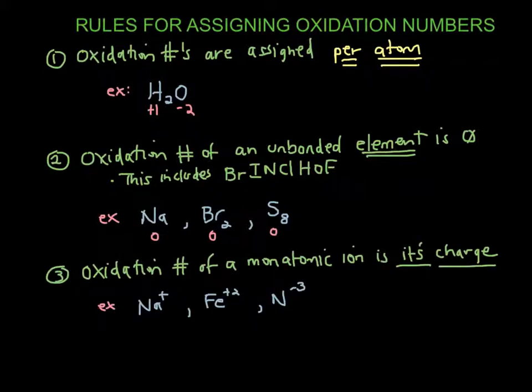Rule three: the oxidation state of a monatomic ion is its charge. So an unbonded monatomic ion — just all alone, not bonded to anything — whatever its charge is, that is its oxidation state. So sodium is +1, iron is +2, and nitrogen's oxidation state is −3.